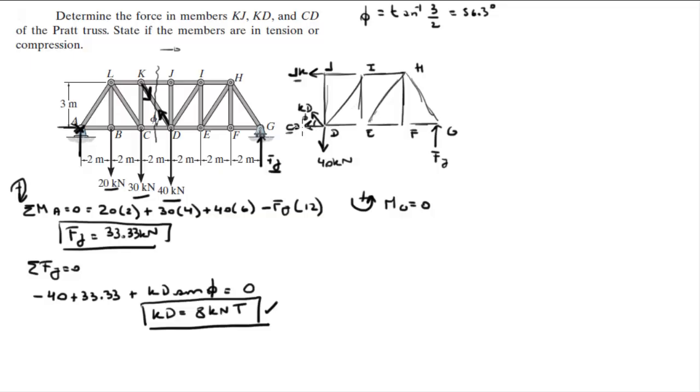Cd doesn't really create any moment because it's aiming straight away from the point. And we already know Kd and the 40. So all you need is the Jk.